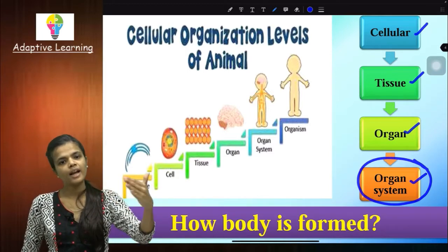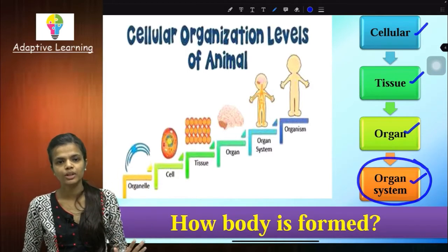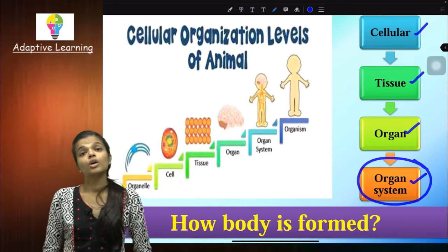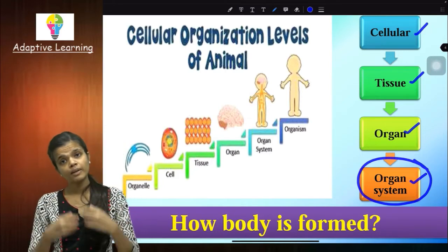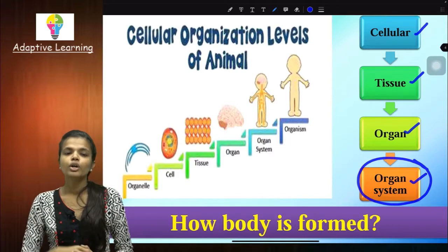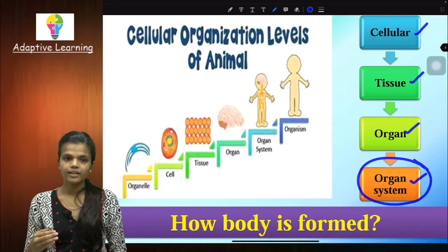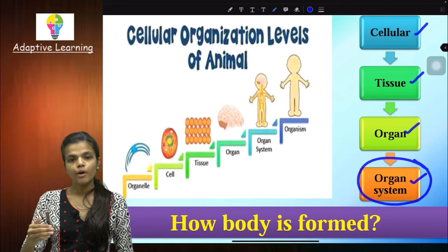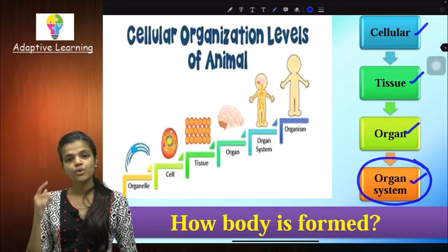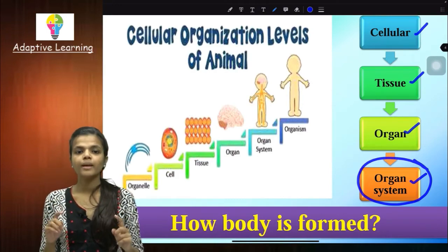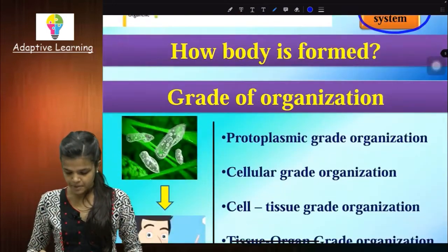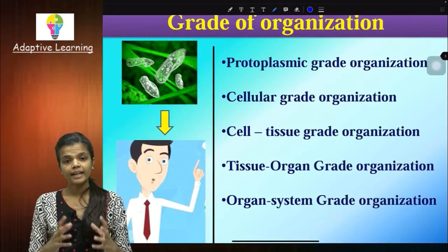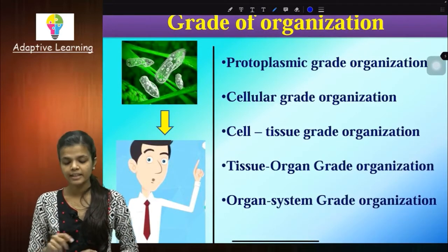In some organisms there are only cells, in some only tissue. If there are organs, there may not be coordination. All these different body organization levels are considered. Robert Whittaker decided one criteria — that is the grade of organization — in which there are five grades.